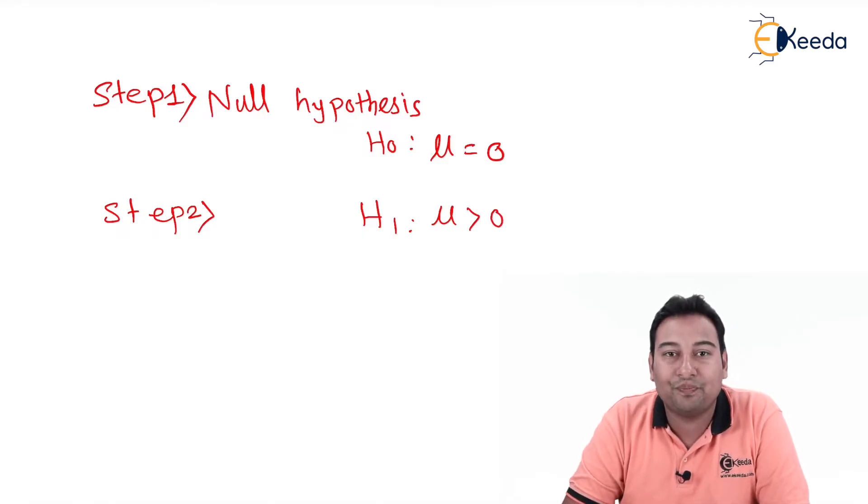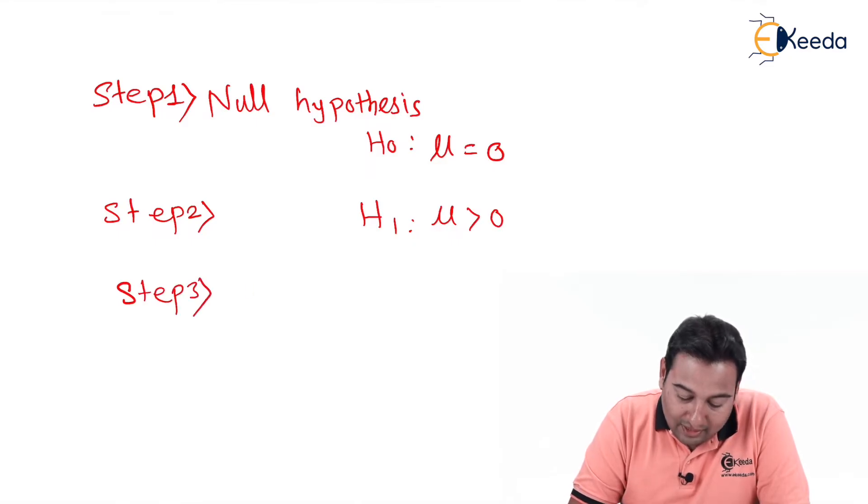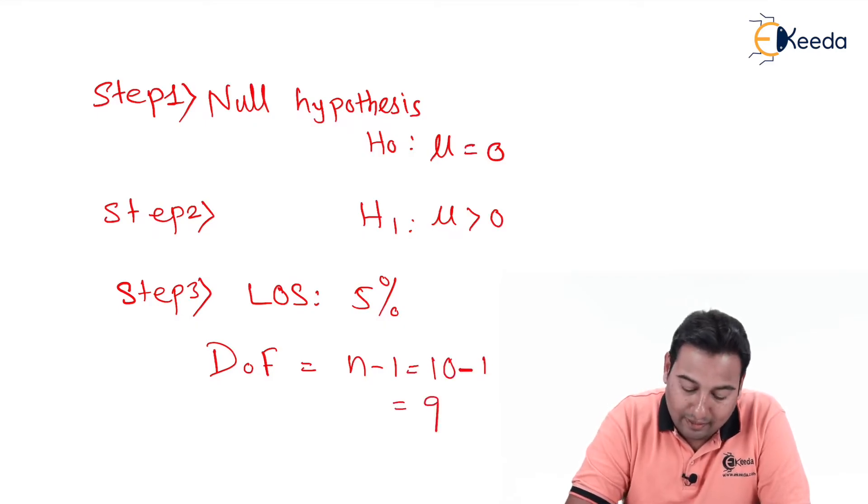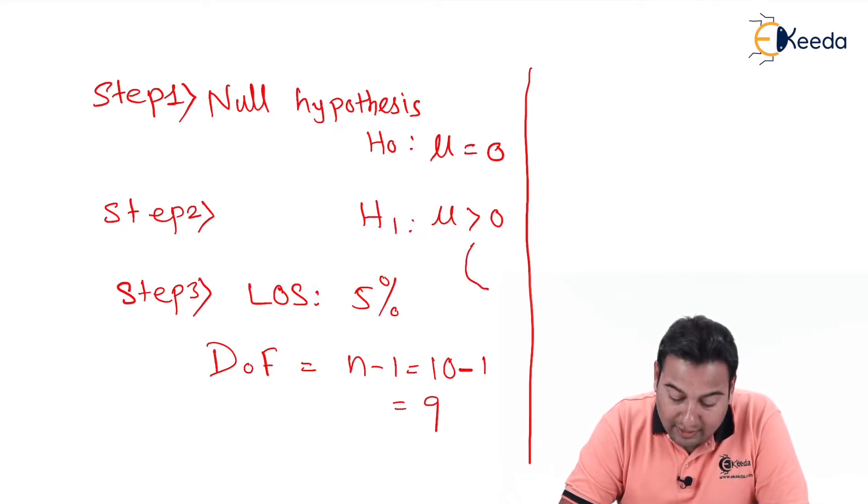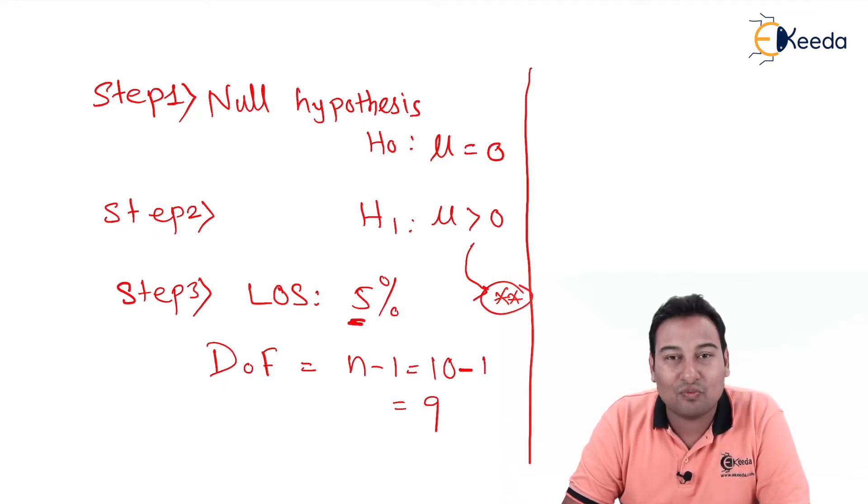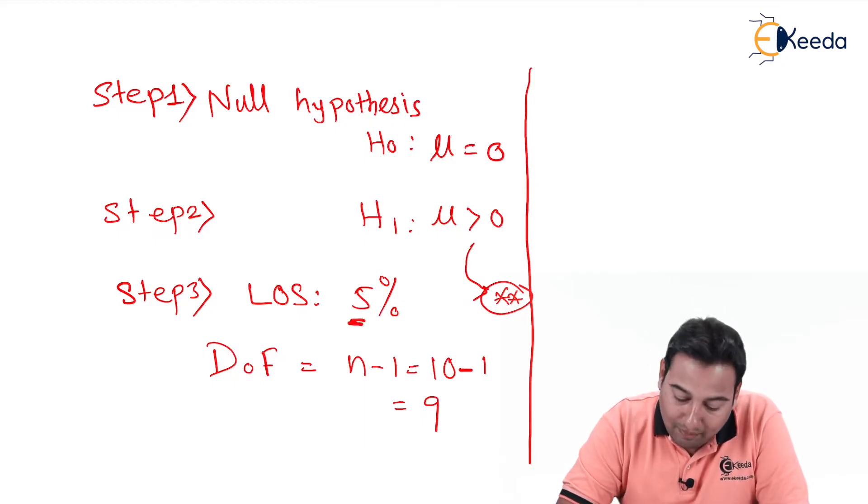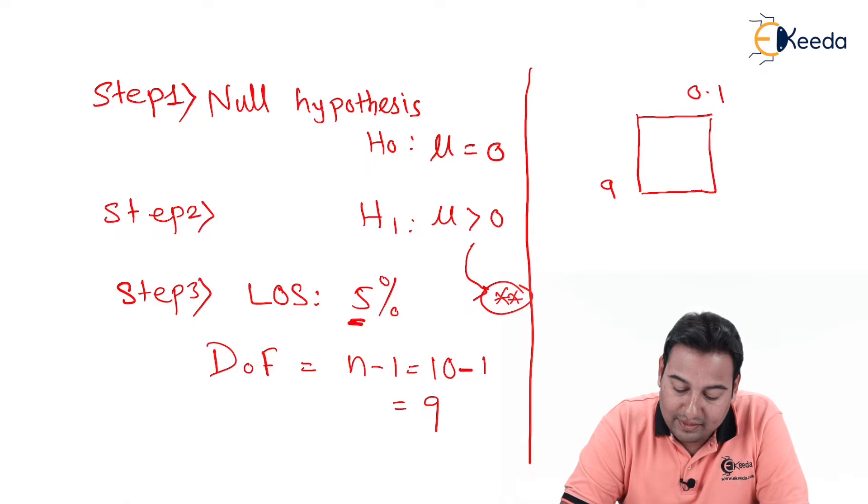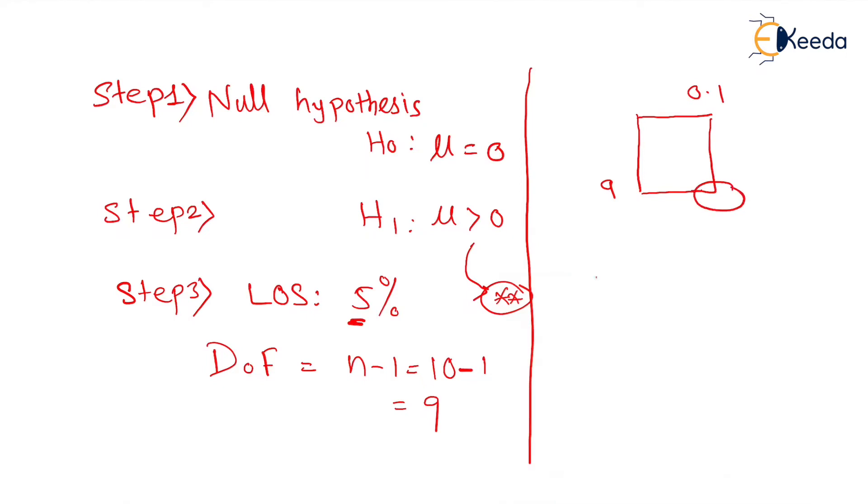Next step is step number three: level of significance. If not mentioned, we assume 5 percent. Degree of freedom is n minus one, so there are 10 students, n minus one equals 9. What does this greater sign indicate? One-tailed test. In case of one-tailed test small sample test, LOS will become double, that means we're taking LOS as 10 percent. Degree of freedom 9, LOS 10 percent. We'll see this value in the table and that value comes out to be 1.833.